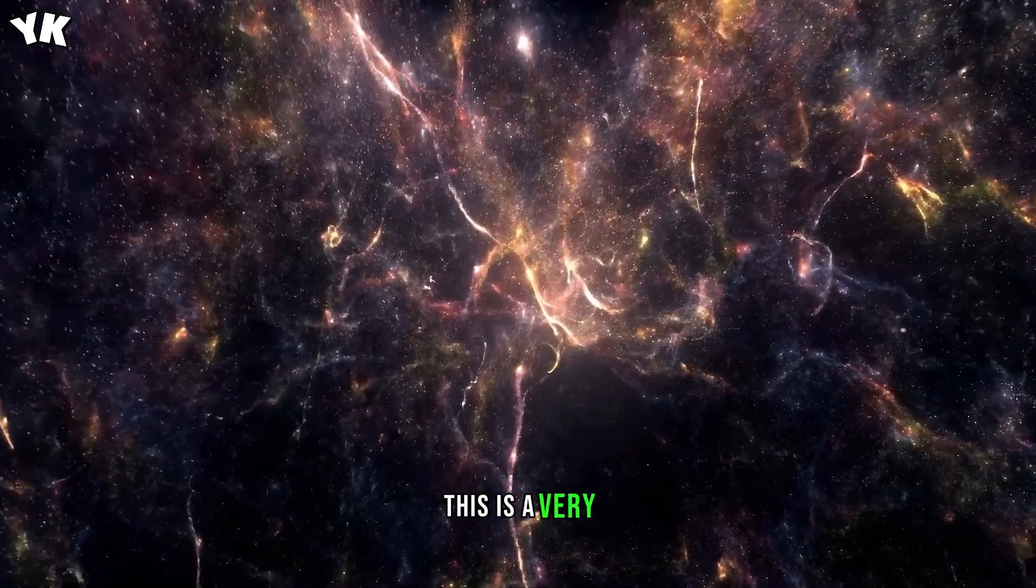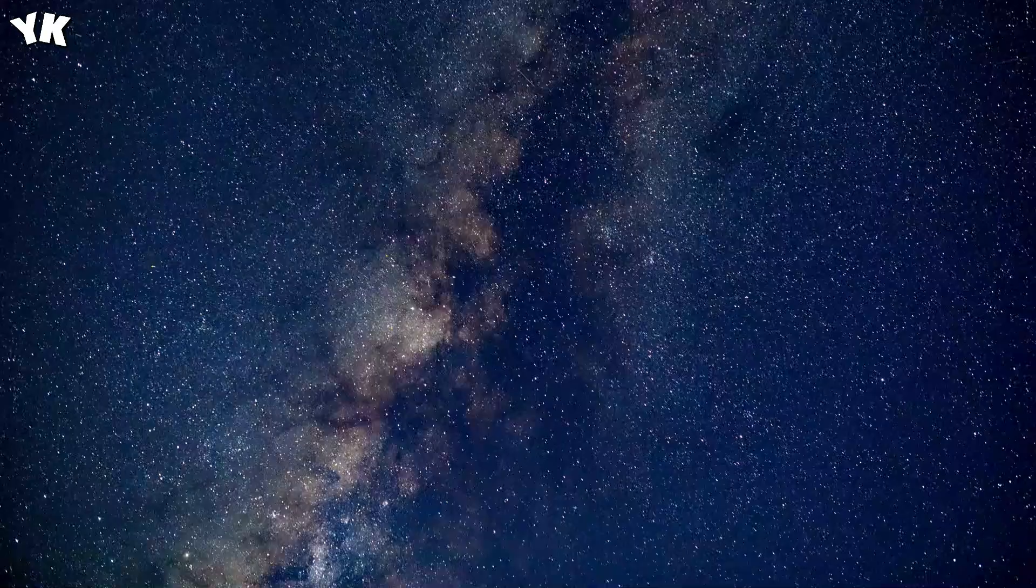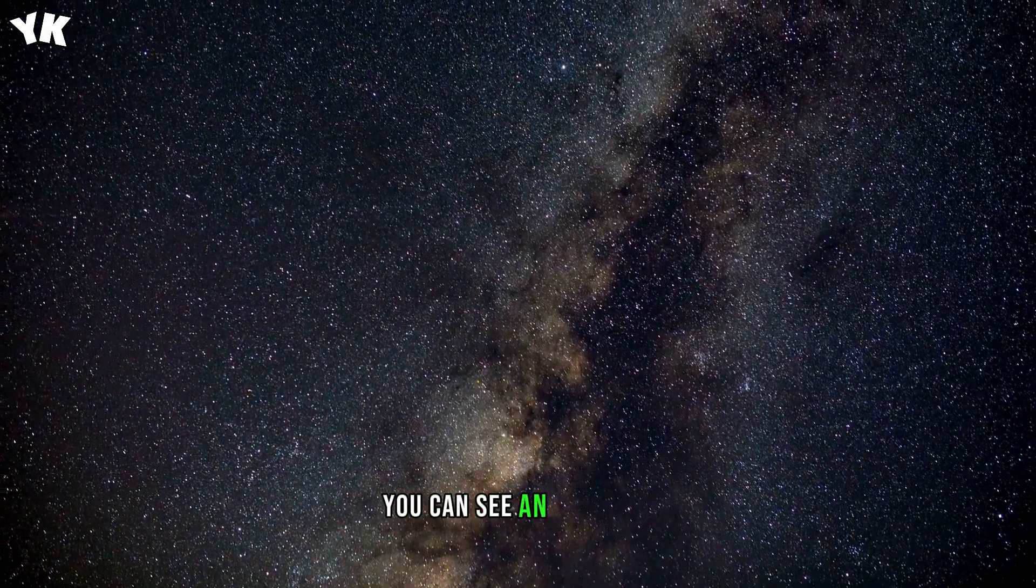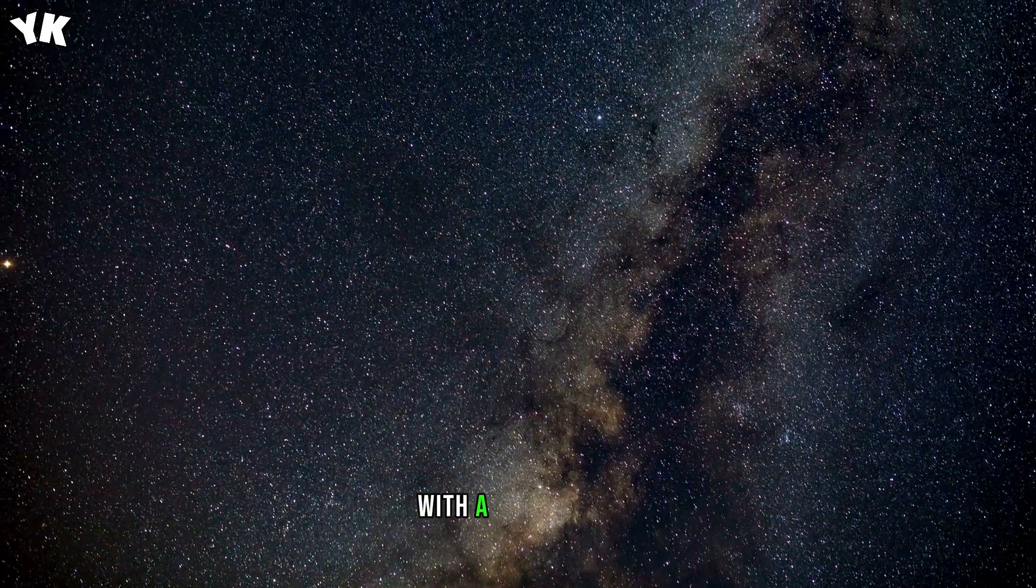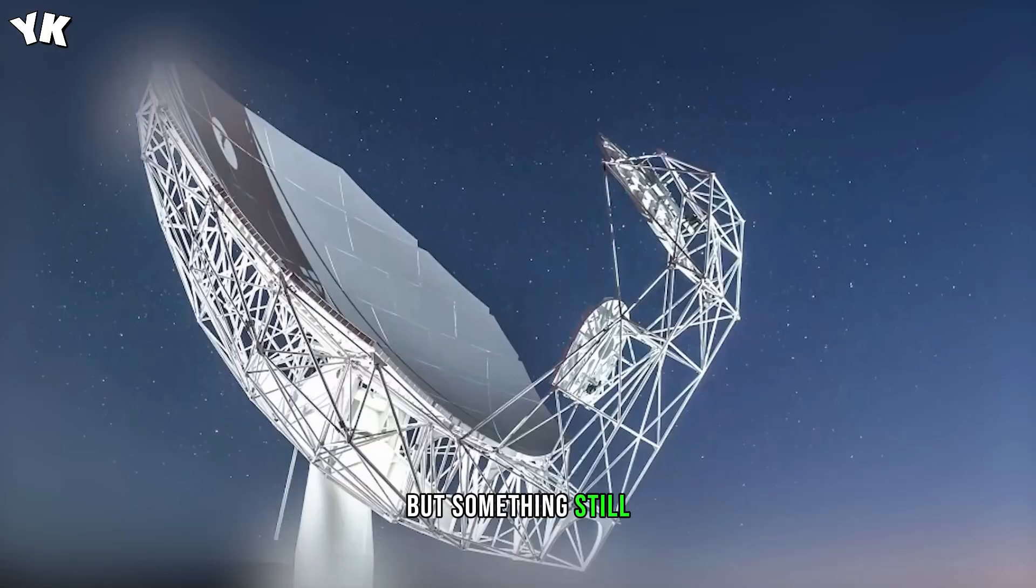This is a very detailed picture, and every object in it is kind of a mystery. This is a spherical supernova explosion, and here, on the right, you can see an unknown object that looks like a comet with a bright tail. However, it's not a comet but something still unknown to astronomers.